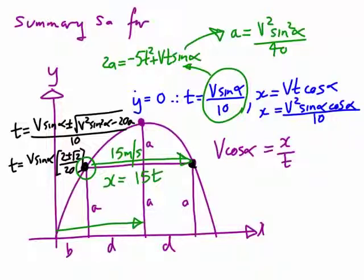So x on 2 would be 15 on 2 times t, and these are the total displacements for v cos alpha equals x over t — so the x values are those two parts added together.